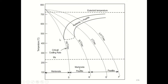If the cooling rate is increased further to 140°C/second, the cooling curve just misses the pearlite start curve and does not enter the pearlite or bainite regions. The product in this case is fully martensite, as the austenite transforms completely to martensite on crossing the Ms line. This cooling rate is called the critical cooling rate, which must be exceeded to obtain full hardening of the steel.